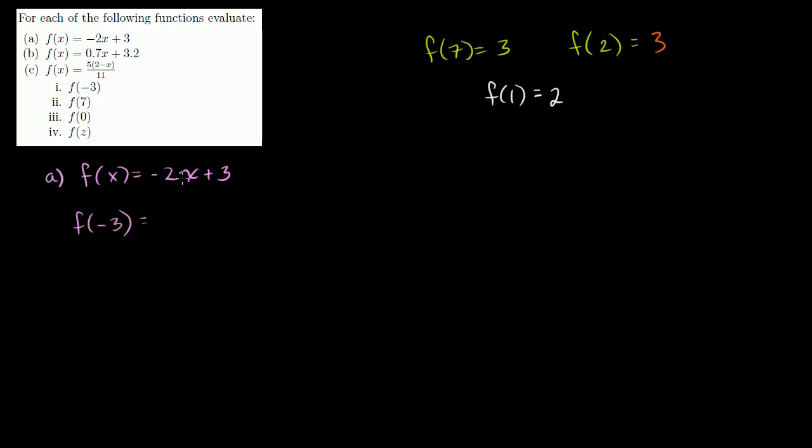They want to know what happens when f is equal to negative 3. Well, this is telling me, what do I do with the x? What do I produce? So wherever I see an x, I replace it with a negative 3. So it's going to be equal to negative 2 times negative 3 plus 3.